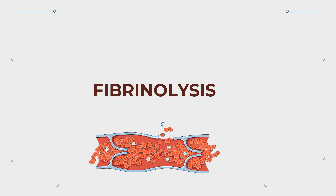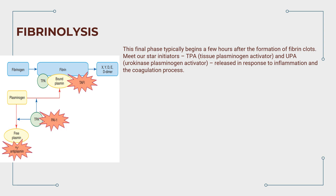Fibrinolysis is the phase where our body's mechanisms come full circle to ensure the timely resolution of clots. This final phase typically begins a few hours after the formation of fibrin clots. The star initiators are TPA, tissue plasminogen activator, and UPA, urokinase plasminogen activator, released in response to inflammation and the coagulation process.